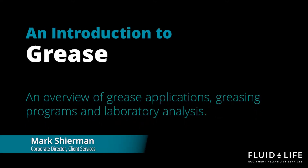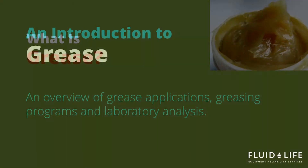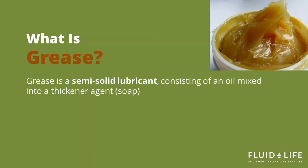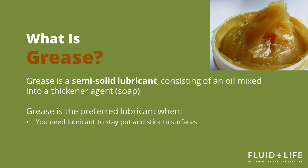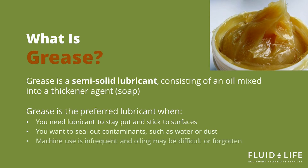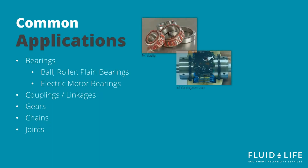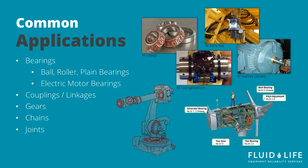Today we're going to talk about grease and grease analysis. Greases are typically a semi-solid lubricant consisting of an oil mixed with a thickener agent. The oil provides the lubrication while the thickener agent keeps the grease in place. You would typically use a grease when you want the lubricant to stay in place, to seal out contaminants, or when the machine use is infrequent. Grease is used in a number of applications including bearings, couplings, gears, chains, and joints.